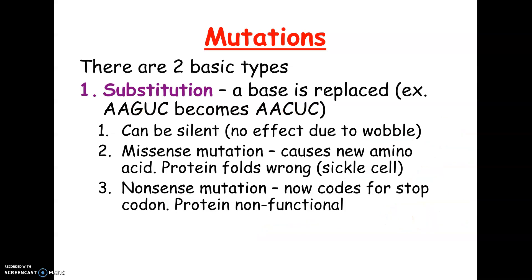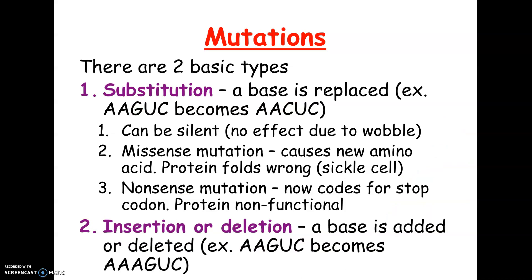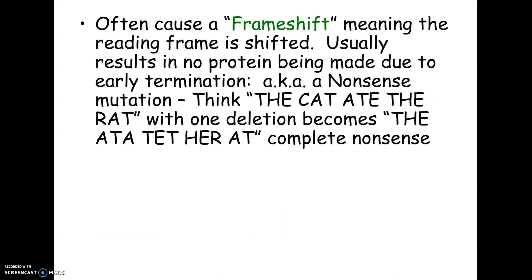The other type is an insertion or deletion. This is where an extra letter gets added or a letter is missing. So A-A-G-U-C becomes A-A-A-G-U-C — you've got an extra letter. This is actually a much bigger problem than you would think, because bases are read three letters at a time. Your cell is not going to know there's an extra or missing letter — it's still going to read three letters at a time. What happens is you get something called a frameshift, meaning the reading frame gets shifted.